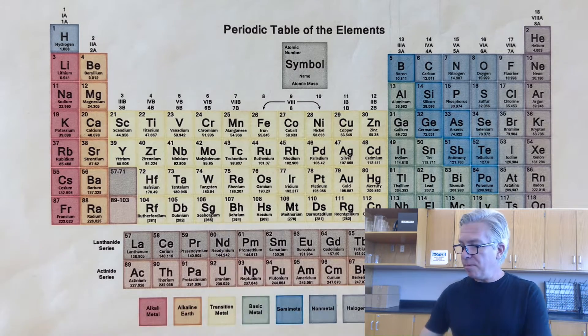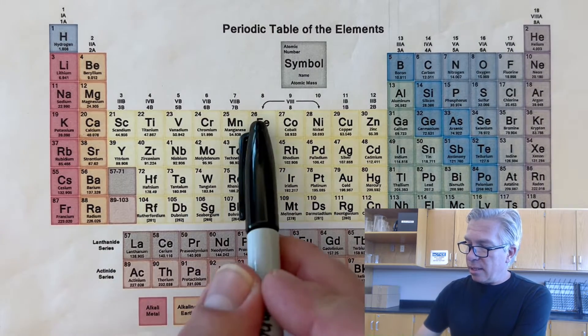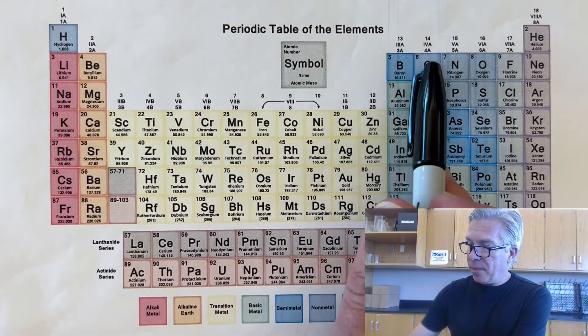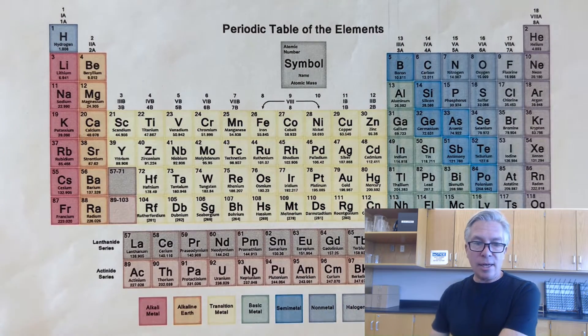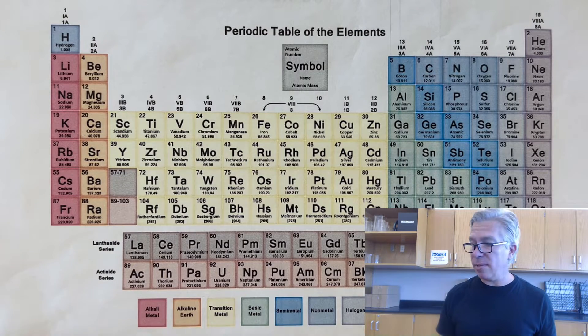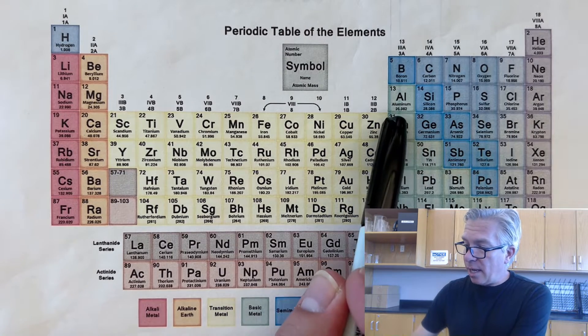A couple of quick terms that you'll need to know as we do isotopes is the atomic number. And that's that number in the upper corner of a periodic table usually. And that tells you how many protons. So if you're ever asked how many protons does something have, don't guess. Just go look at a periodic table. That's what it's there for.